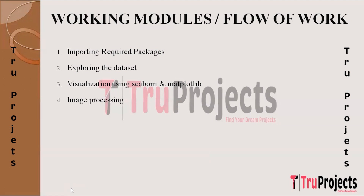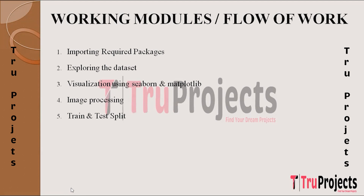The next step is image processing. Image processing steps such as shuffling and normalization are applied to the dataset. Shuffling ensures a diverse distribution of images during training, and normalization standardizes pixel values, enhancing model convergence and performance. Following this, the dataset is divided into training and testing sets to assess the model's generalization capabilities. This split is crucial for evaluating model performance on unseen data.